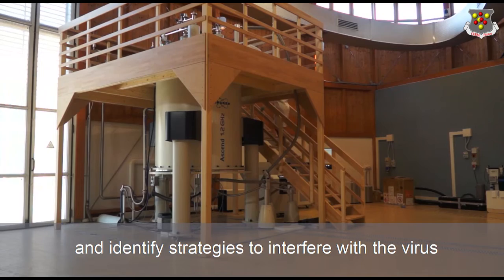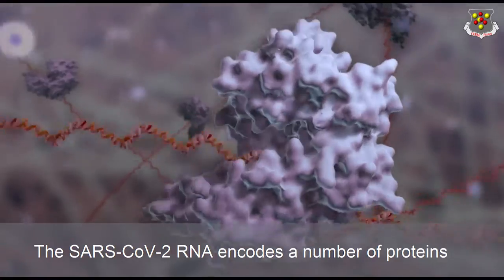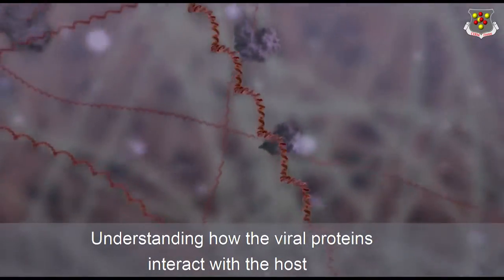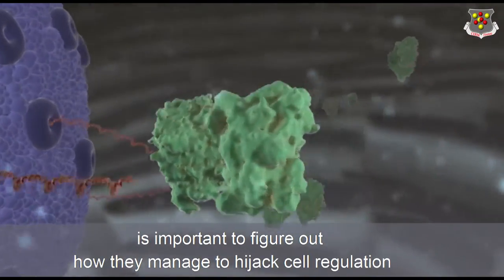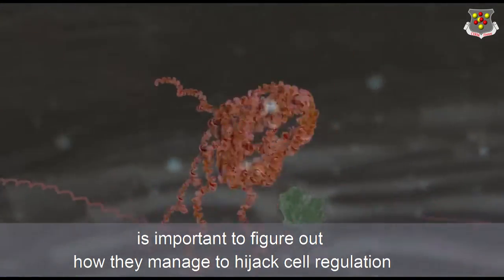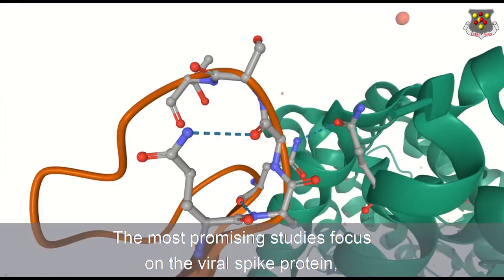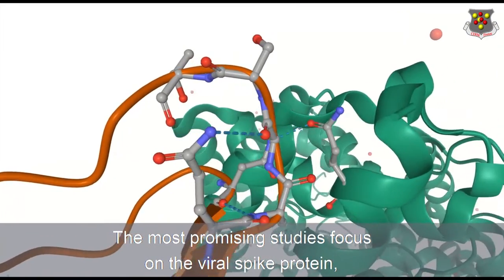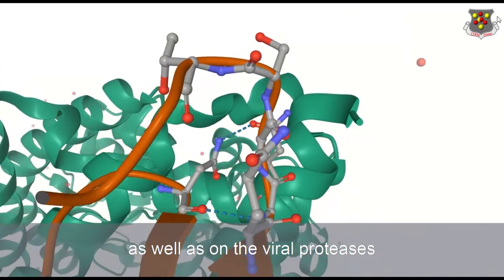The SARS-CoV-2 RNA encodes a number of proteins. Understanding how the viral proteins interact with the host is important to figure out how they manage to hijack self-regulation. The most promising studies focus on the viral spike protein, which is involved in the first phases of infection, as well as on the viral proteases.